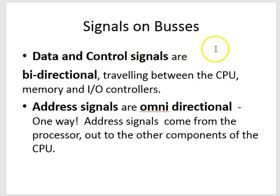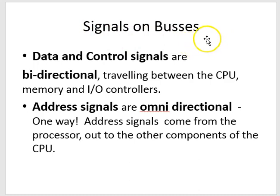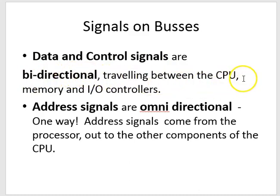Now, the signals on the bus — because there are electronic signals which travel on these buses. The data and control signals are bi-directional, which means they travel in both directions between the CPU, the memory, and the I/O controllers.